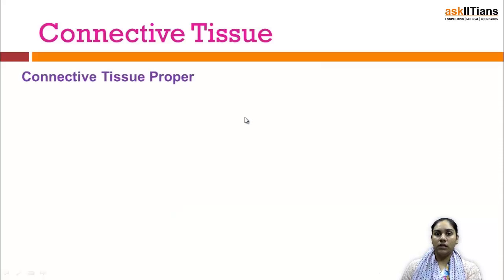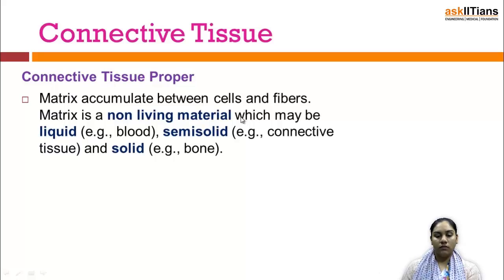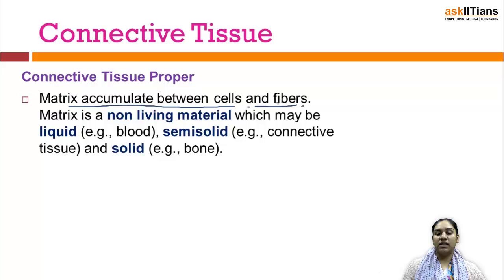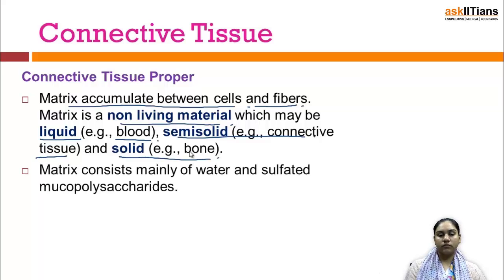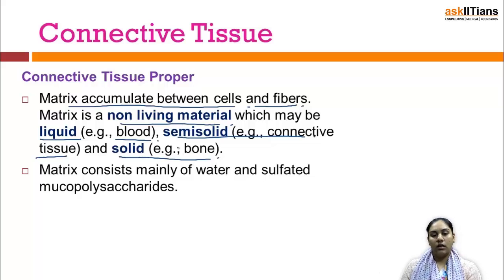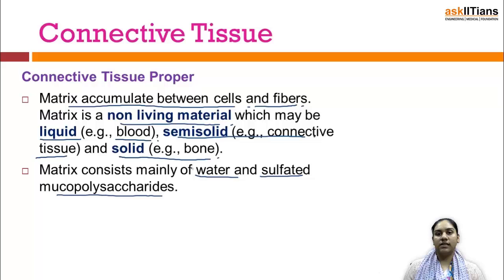The first type of connective tissue is connective tissue proper. The matrix accumulates between the cells and fibers. Matrix is a non-living material which may be liquid — for example, blood — semi-solid — for example, connective tissue — and solid — for example, bone. Matrix mainly consists of water and sulfated mucopolysaccharides, so matrix consists of carbohydrates.